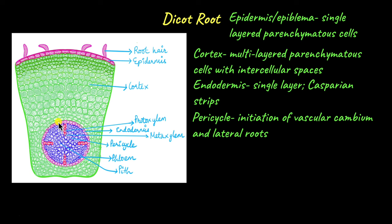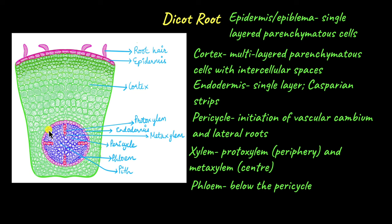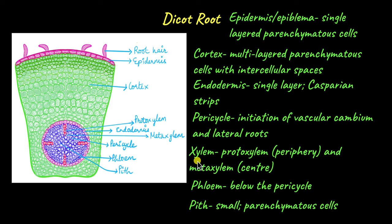The vascular bundles in the roots are located within the endodermis. Xylem and phloem are arranged in an alternating manner in a radial way. In xylem, protoxylem is located towards the periphery and metaxylem is located towards the center. Protoxylem forms first during primary growth and afterwards metaxylem forms. Phloem lies below the pericycle cells in between two patches of xylem, and the tissue between xylem and phloem is called conjunctive tissue. Dicot roots have around two to four vascular bundles — in this image you can see four xylem patches and in between them four phloem patches.